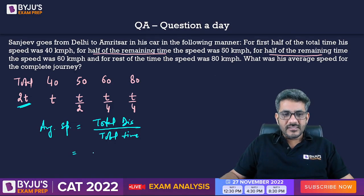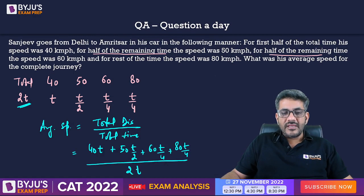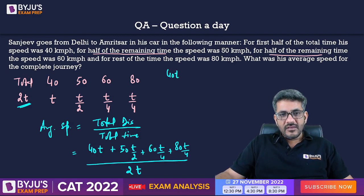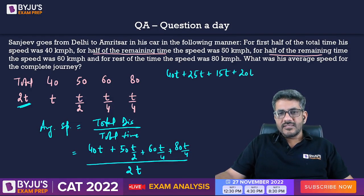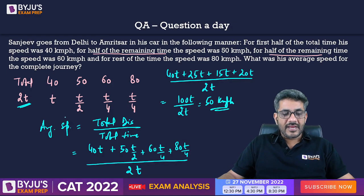Speed into time is the distance. So 40 × t is the first distance, 50 × t/2 is the second, 60 × t/4 is the third, and 80 × t/4 is the fourth. This is divided by 2t as the total time. That gives: 40t + 25t + 15t + 20t divided by 2t, which equals 100t / 2t. The average speed is 50 km/h.